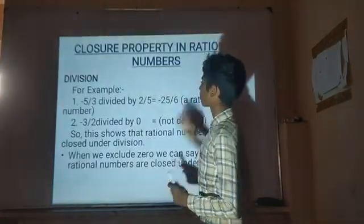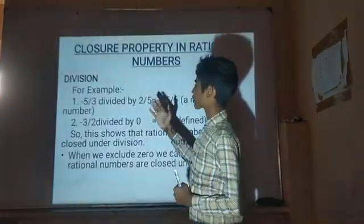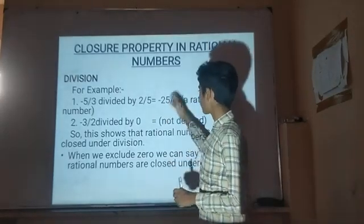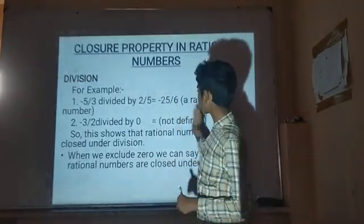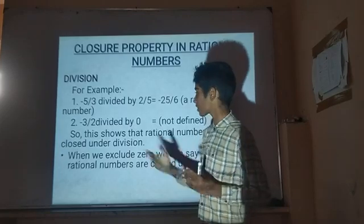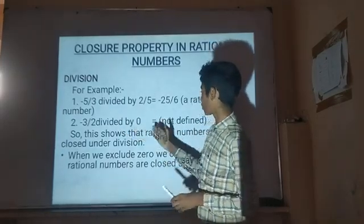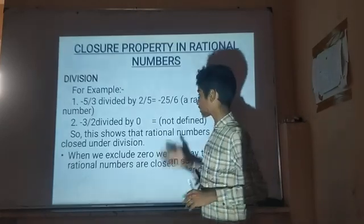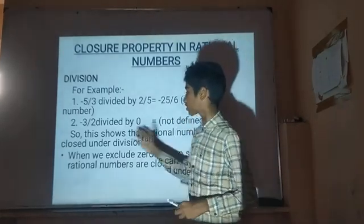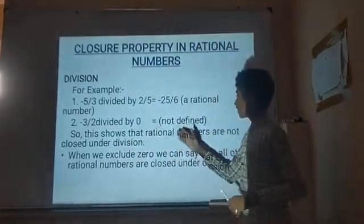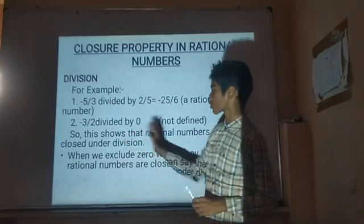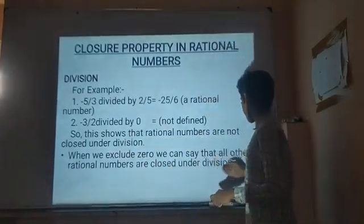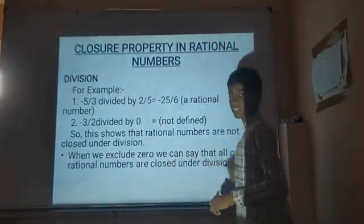Closure property — Division: for example, minus 5 by 3 divided by 2 by 5 is equal to minus 25 by 6, which is a ratio number. However, minus 3 by 2 divided by 0 — anything divided by 0 is not defined, so this is not a ratio number. This shows that ratio numbers are not closed under division. When we exclude 0, all other ratio numbers are closed under division.